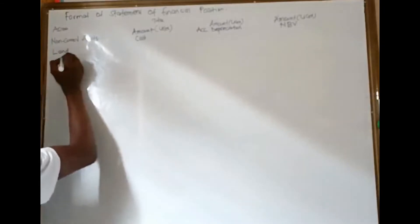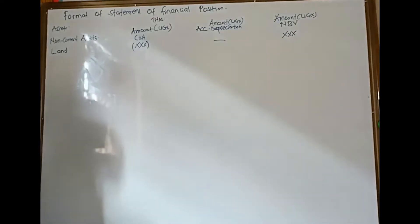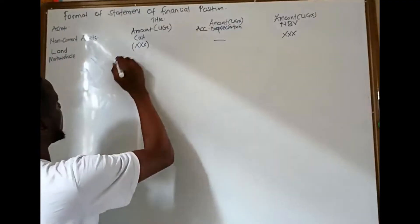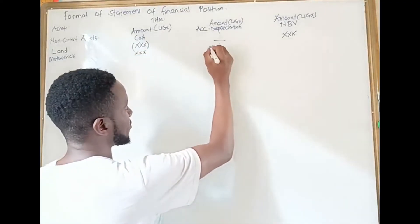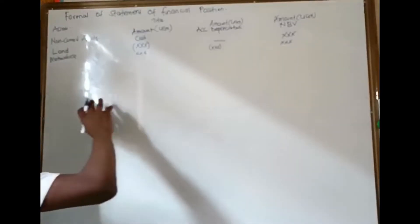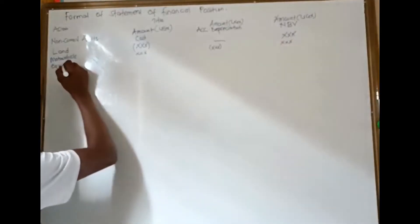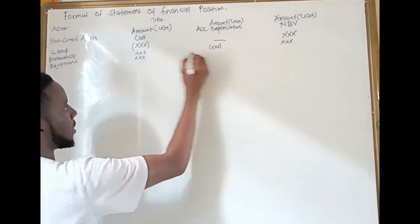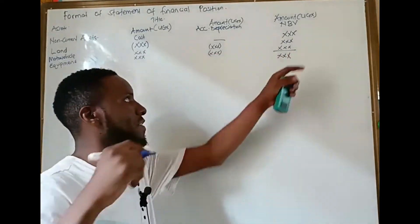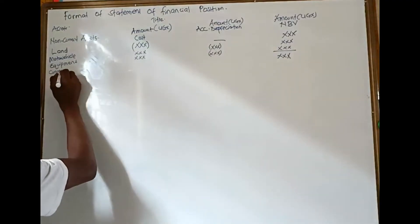Under non-current assets we shall have several items. Land — we bring its cost and since it does not depreciate, the same amount carries through. Motor vehicle — we bring its cost, depreciate it, and find the net book value. Furniture and equipment also depreciate. We take off the accumulated depreciation to get the net book value, then find the total net book value for all non-current assets. Then we move to current assets.